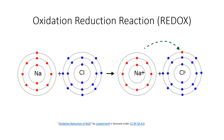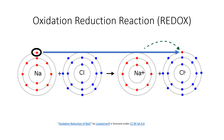On the left we can see sodium and chlorine. Sodium has electrons highlighted in red, while chlorine has electrons highlighted in blue. What's going to occur is sodium is going to lose one of its electrons, and that electron is going to go to chlorine.